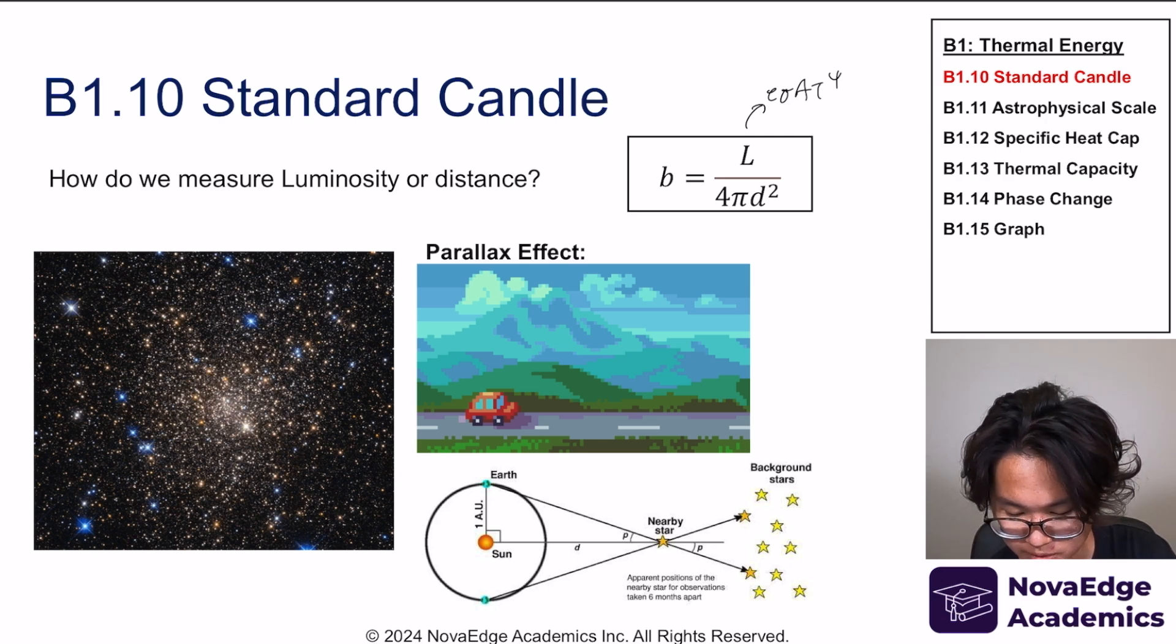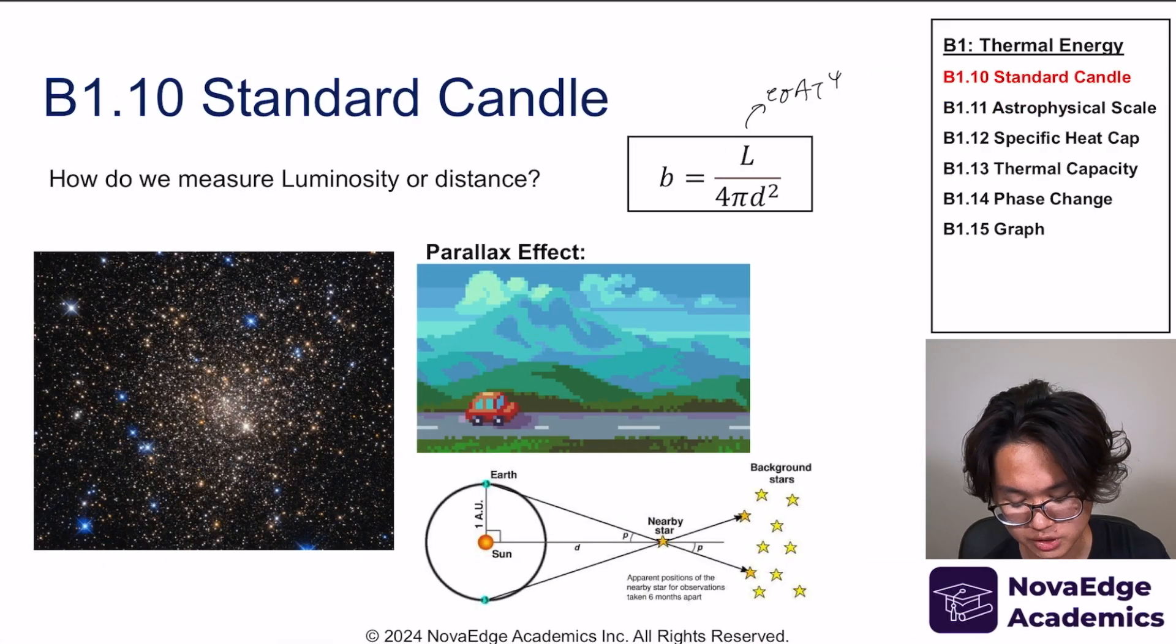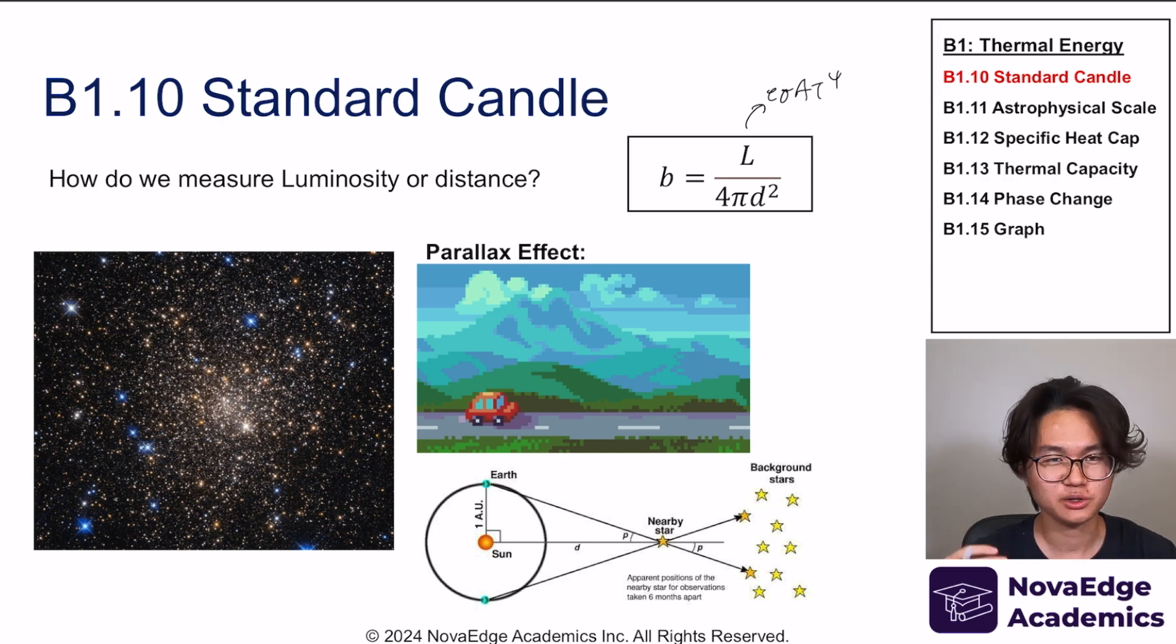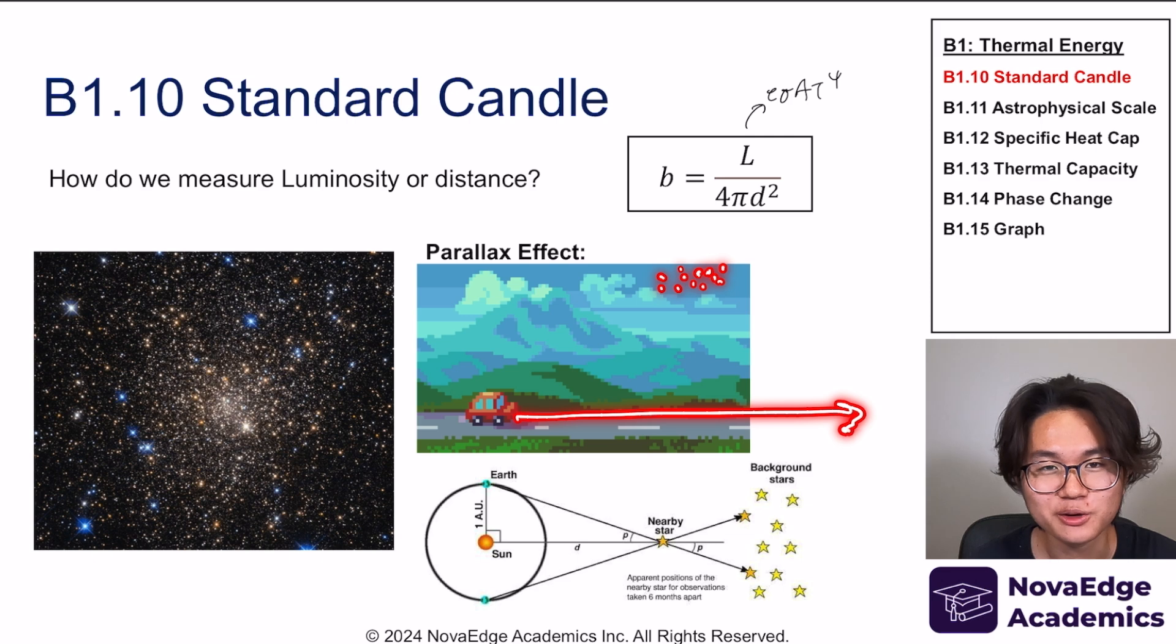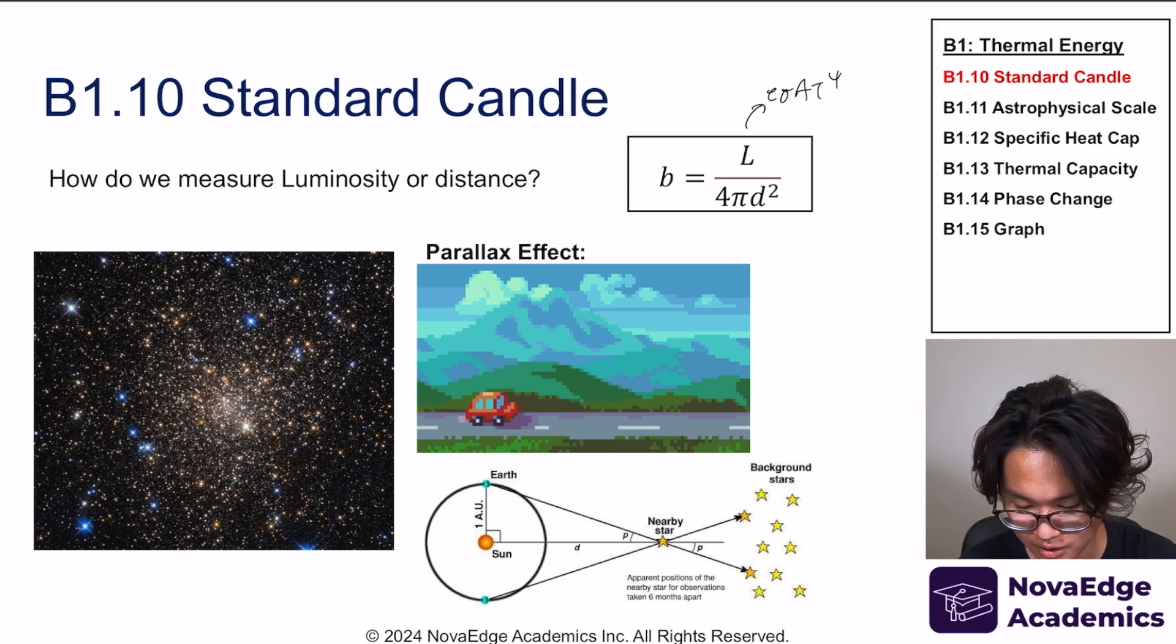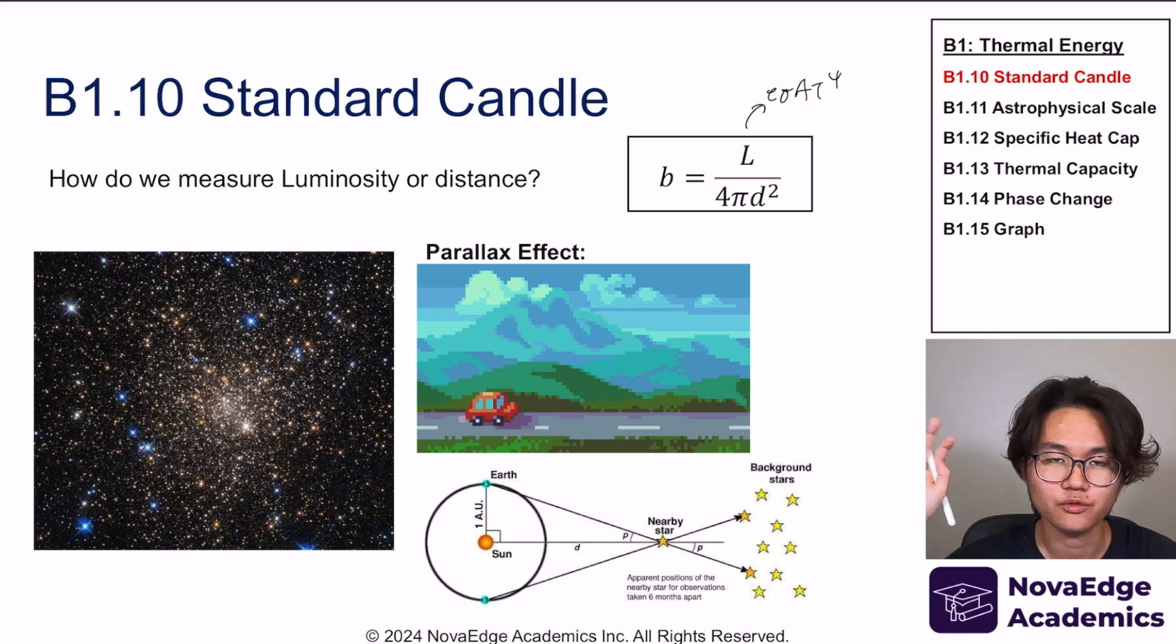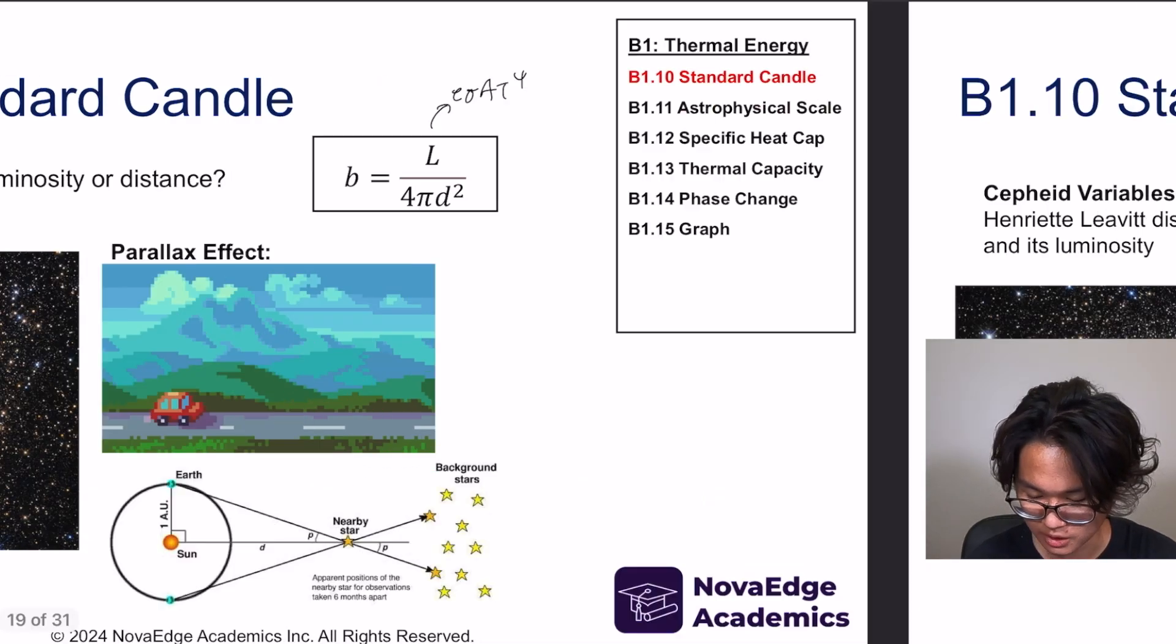So why am I talking about this and what is this standard candle? The question becomes what if we're not talking about nearby stars? What if it's light years away? If it's so far away, then if we have stars like this—no matter how far the car goes, they don't move at all. So how can I get it as a function of this movement? We can't measure the distance using the parallax effect. We always have a struggle to find the luminosity or the distance of planets and stars far away. We don't know how to calculate it. So how do we do it?